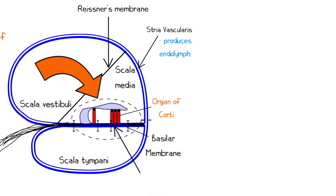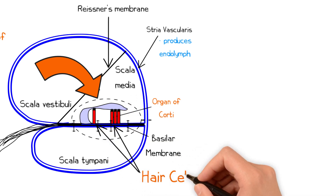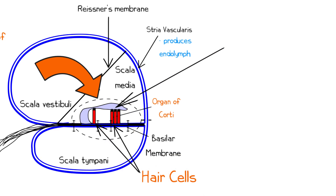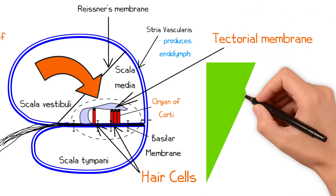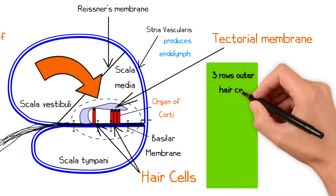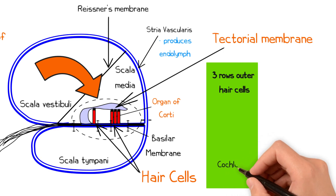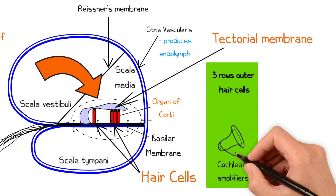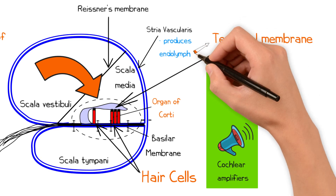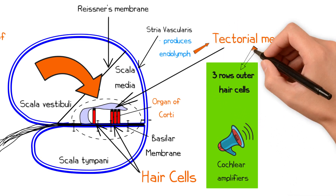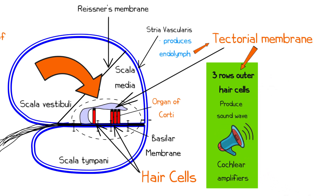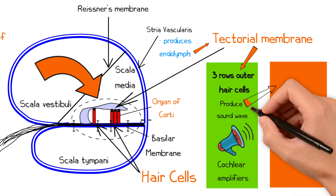The organ of Corti consists of three rows of outer hair cells along with a single row of inner hair cells. The tectorial membrane lies on top of these hair cells. The outer hair cells do not detect hearing, but rather serve as cochlear amplifiers. When vibrations of the tectorial membrane, caused by vibrations of the endolymph, are detected by the outer hair cells, these contract, producing a sound wave which is detected by the inner hair cells.